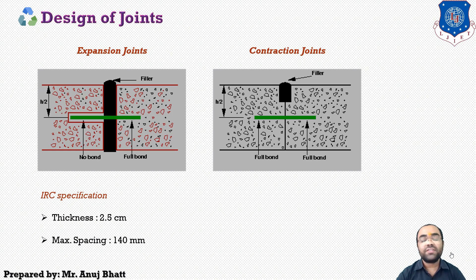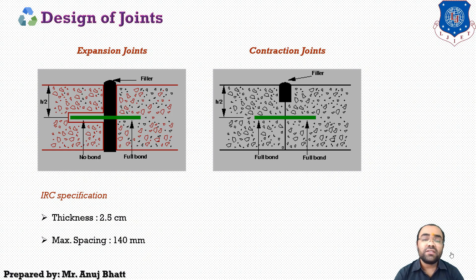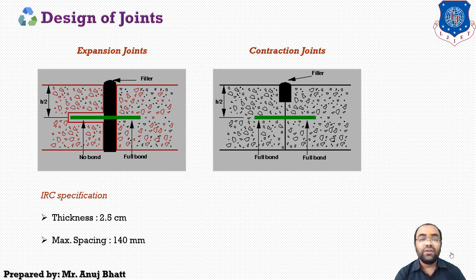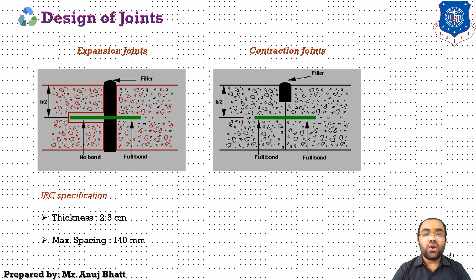The spacing between two joints should generally be 2.5 centimeters and the spacing between two joints does not exceed 140 millimeters. So this was all about the expansion joints, and now let's talk about the contraction joints.